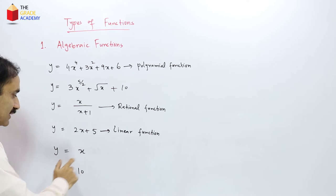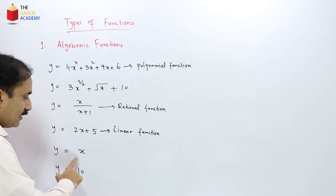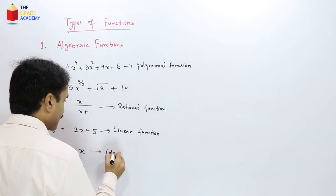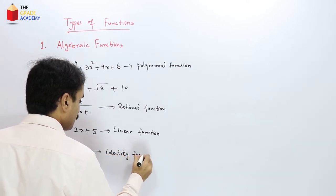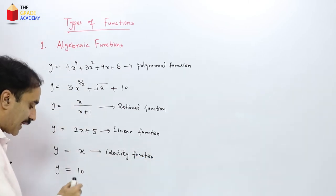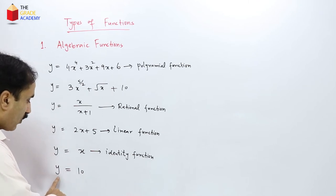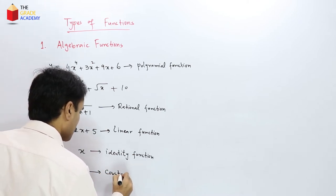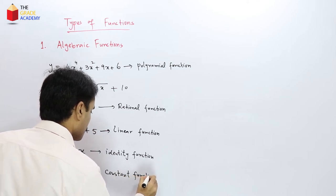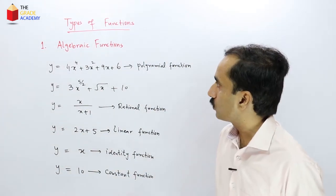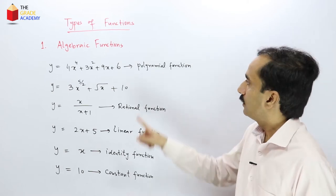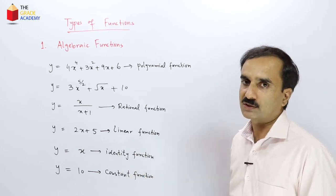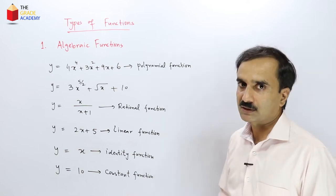The function y = x is called the identity function. The function y = constant (e.g., y = 10) is called a constant function. So algebraic functions can be divided into polynomial functions, rational functions, linear functions, identity functions, and constant functions.